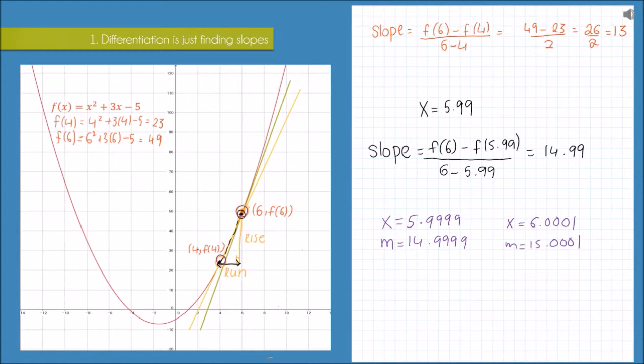Because if you look at our first approximation here, our run was 6 minus 4, which was 2. Then when we took x to be 5.99, our run was only 0.01, and in the final example, the difference between our chosen x value and 6 is only 0.0001.